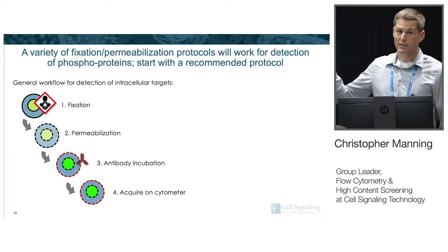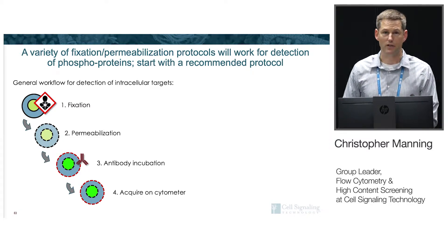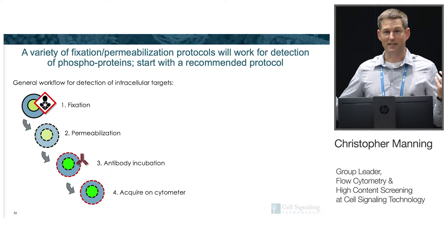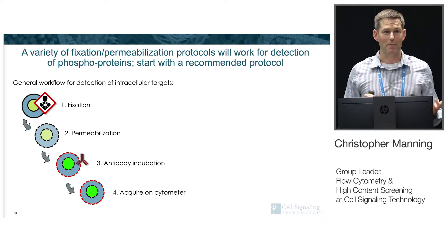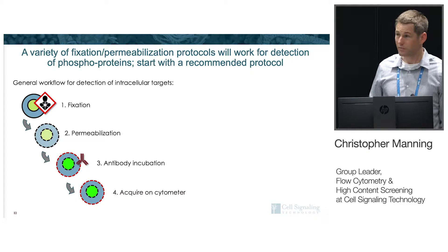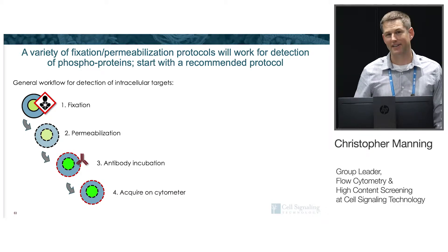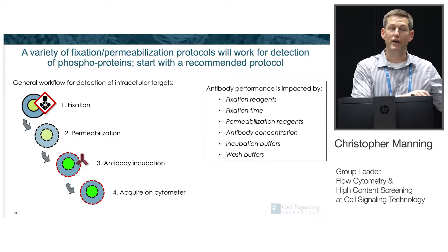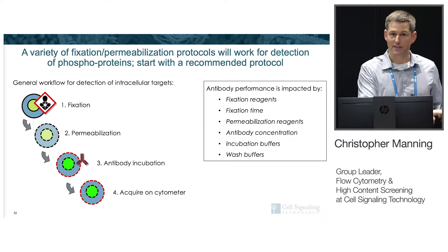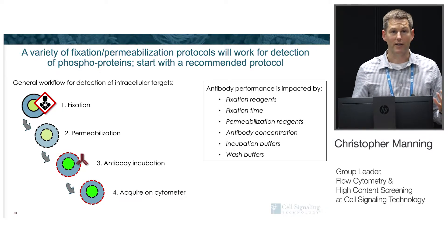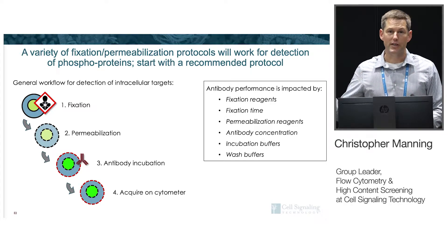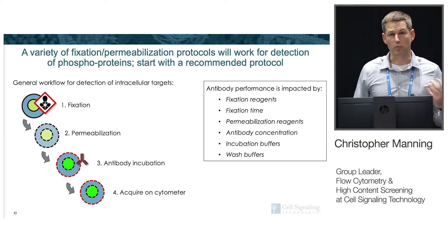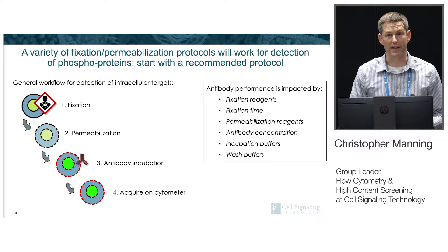The general workflow starts with fixing your cells — using an aldehyde fixative like formaldehyde, or methanol. You want to fix them first because you'll need to permeabilize the cells, and if you permeabilize first you'll lose proteins before locking them down. Then you incubate your antibodies against those intracellular targets and acquire. But be aware that varying your protocol from what was recommended will impact antibody binding — some antibodies are more flexible than others, as I'll show in a few slides.